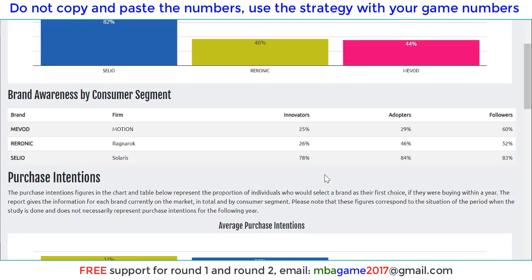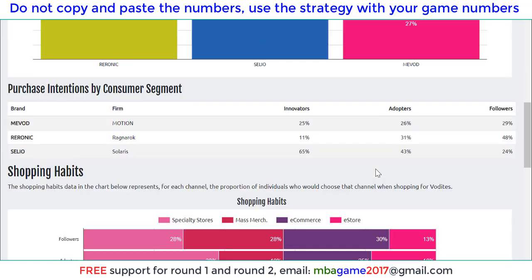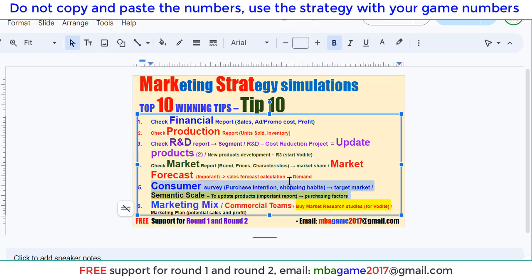For the Goldite market, we can check the awareness here. Awareness is very high — we have much higher customer awareness because we launched the product much earlier than competitors. We can also see the purchase intention here: the Innovator, the Adopter, and Follower segments. Because we set the price for Followers, the other segments are also willing to buy because the price is lower than their expectation. That's the consumer survey report.